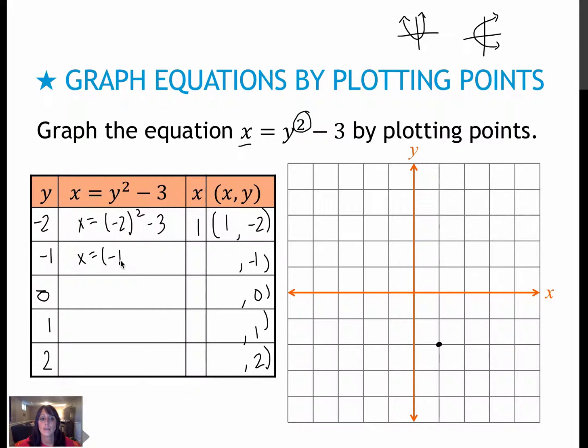Plugging in negative 1, I get negative 1 squared, which is 1. Minus 3 is negative 2. So negative 2, so negative 2, negative 1. Plugging in 0, I get 0 minus 3. 0 squared, which is 0. 0 minus 3 is negative 3. So negative 3, 0.